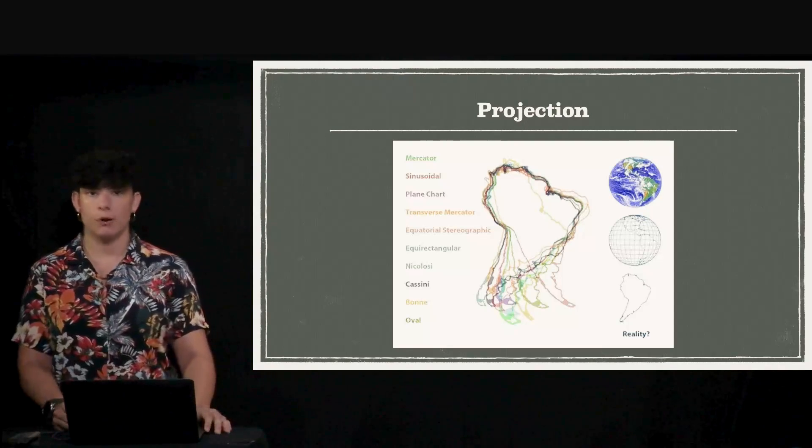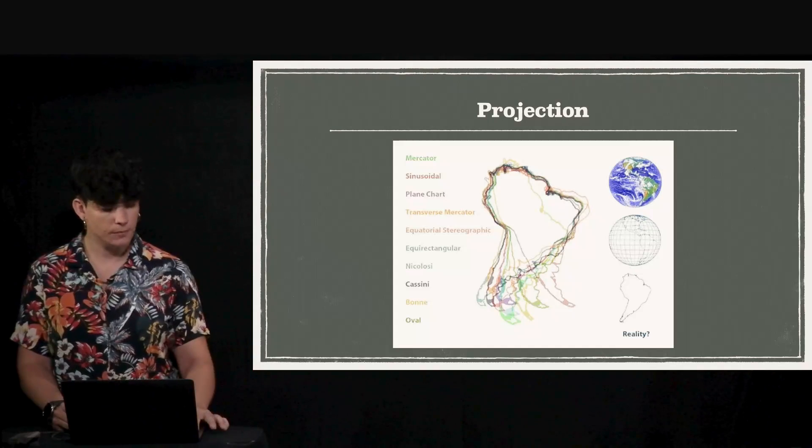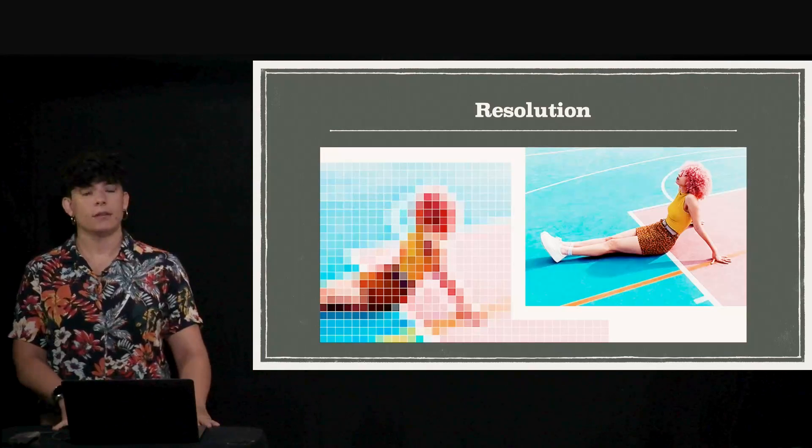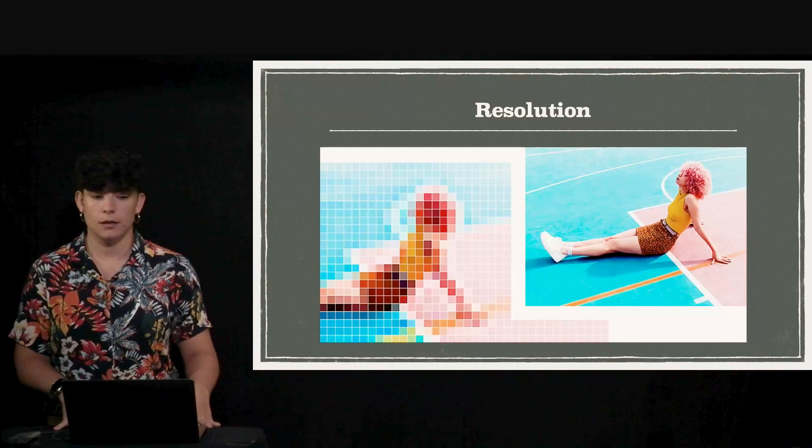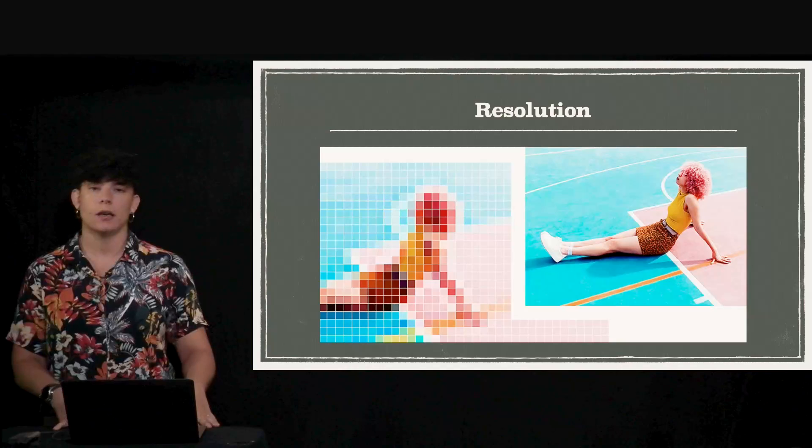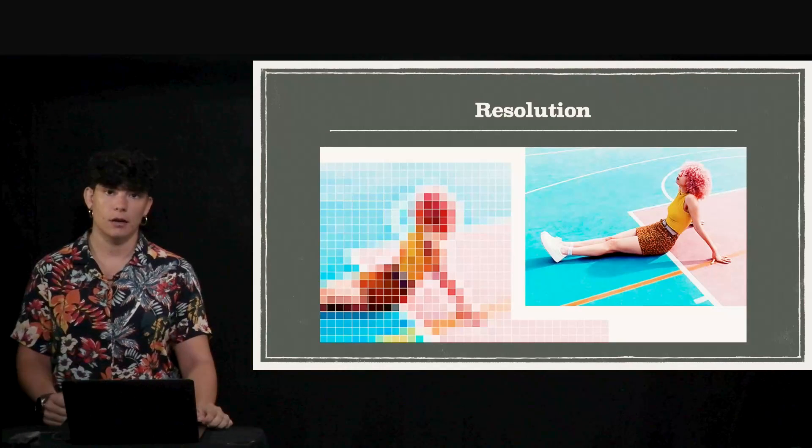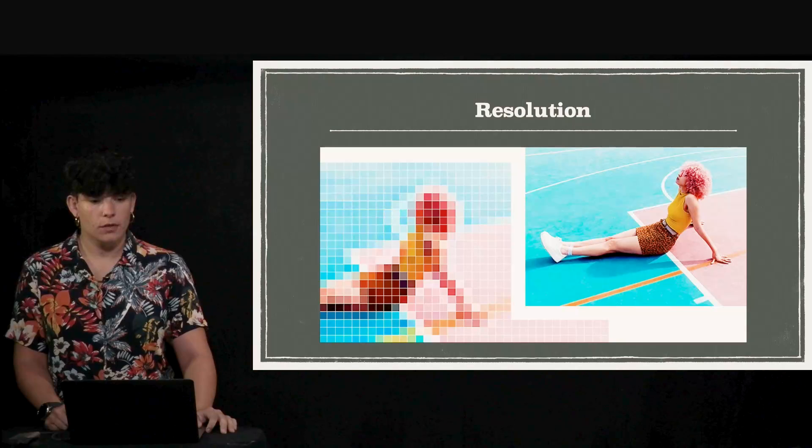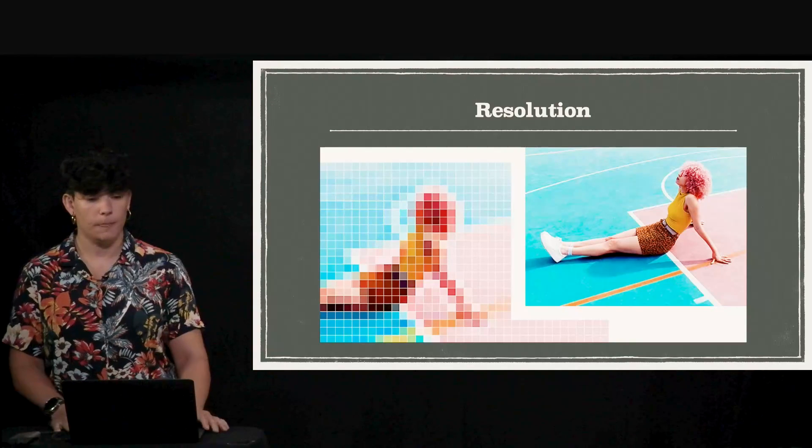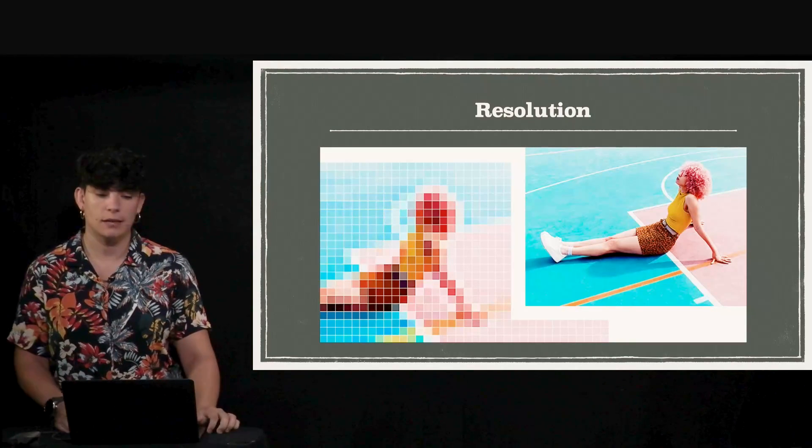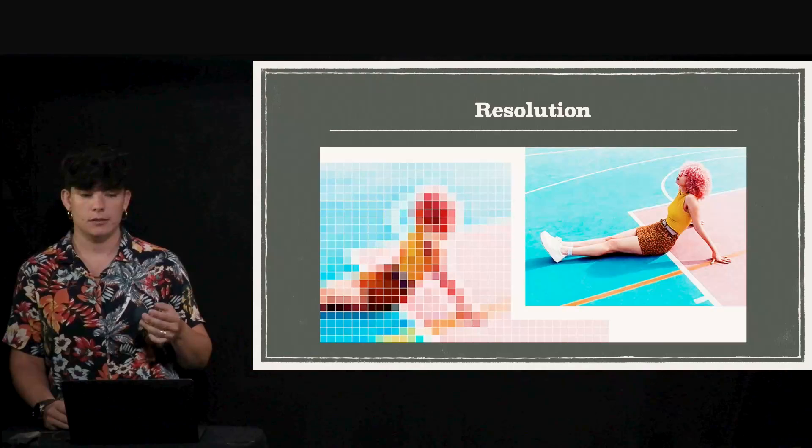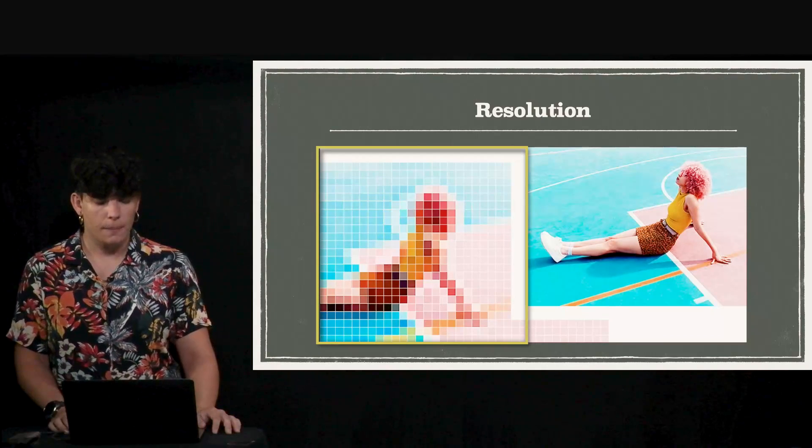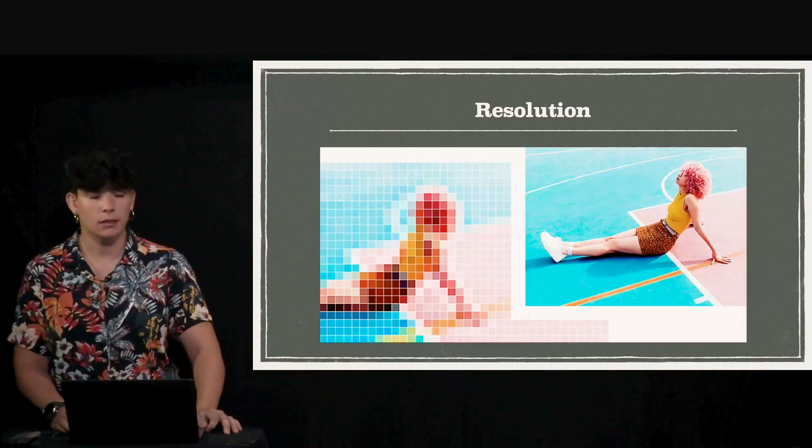Then we have the resolution concept. This is a picture, but a picture would be a good proxy of a raster map, at the end they are built the same. Here we have the same image and the main difference is that the square size is completely different.